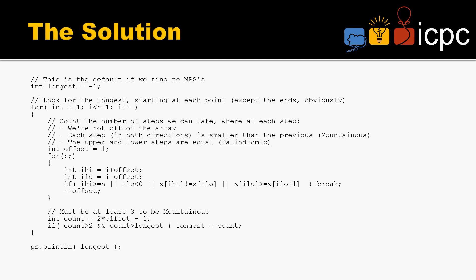The summit has to have a slope on either side of it, so the first element and the last element cannot be summits. If we're looking for summits, we have to start at index 1, since we are zero-based, and we have to stop 1 before the end.